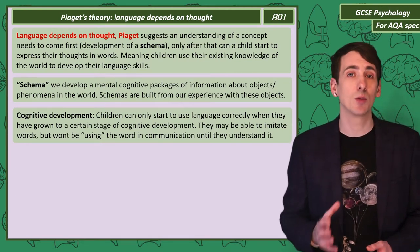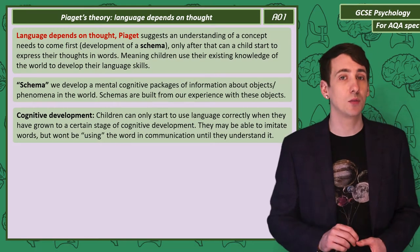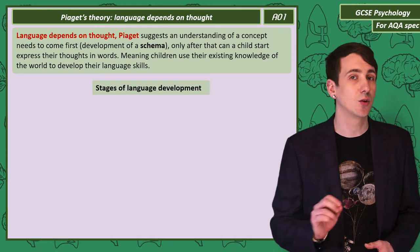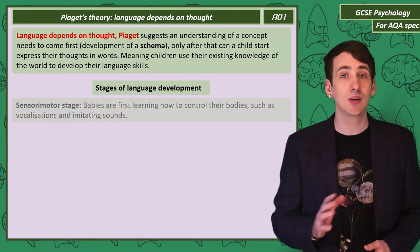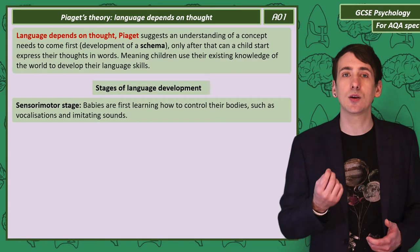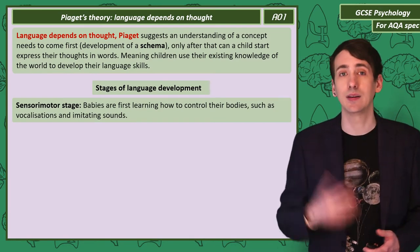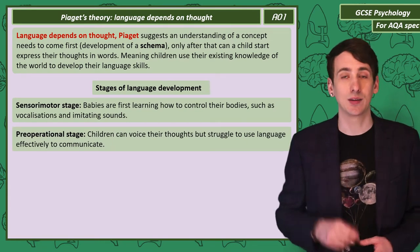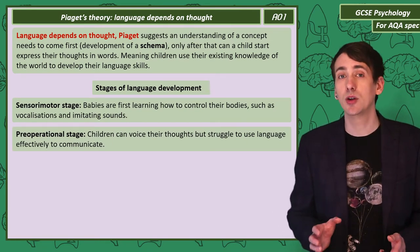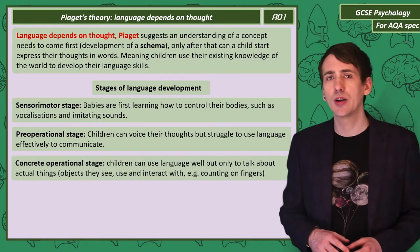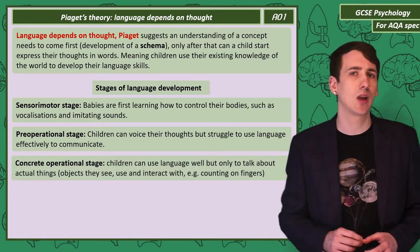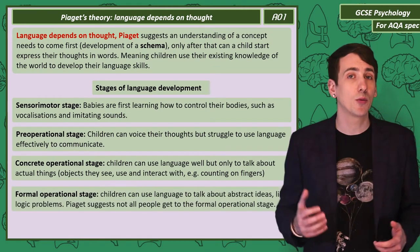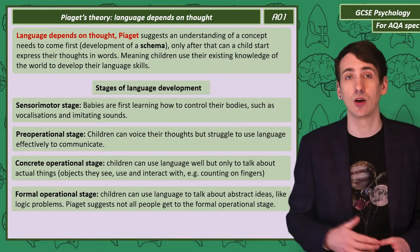If you've already watched my video on Piaget's stages of development, you should be familiar with the names of these stages. The first stage is the sensorimotor stage, where babies are first learning how to use their bodies, including vocalisations and imitating sounds. At the pre-operational stage, children voice their thoughts in a basic way but struggle to communicate effectively. At the concrete operational stage, children can use language well but only to talk about physical objects. At the formal operational stage, children can talk about abstract ideas and logic.